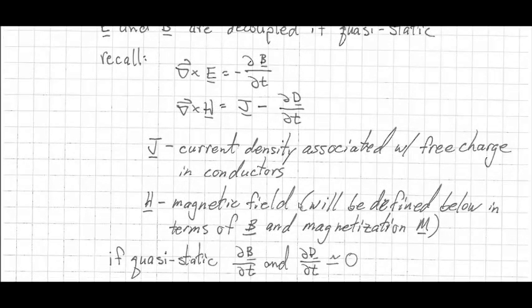So this will be defined below in terms of magnetic flux density as well as we'll introduce magnetization M. And we also have current density. So if you have free-flowing charges in a conductor, you'll have this current density in addition to a time rate of change of electric displacement.